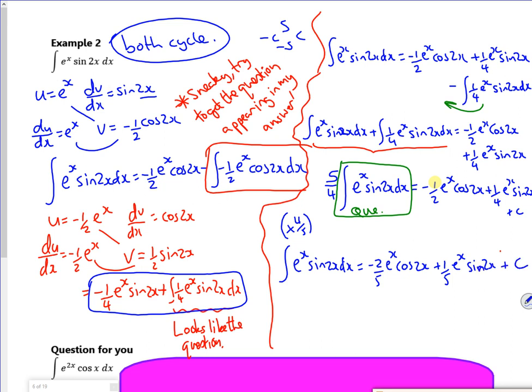If I multiply by 4 over 5, it's still a constant. So that's the answer to that.